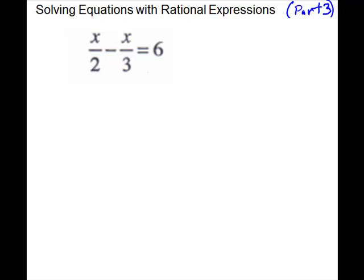We're going to continue solving equations that have rational expressions. This is part three. These problems you would not be able to do as proportions, so you're going to have to clear by multiplying through by the LCD. You can do that on any kind of problem, but the proportion method has to have only one fraction on each side. So we will use our second method throughout.